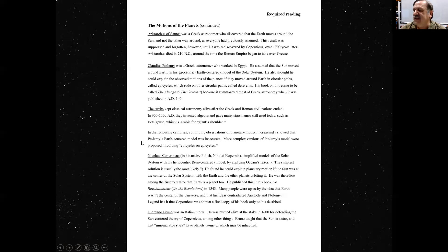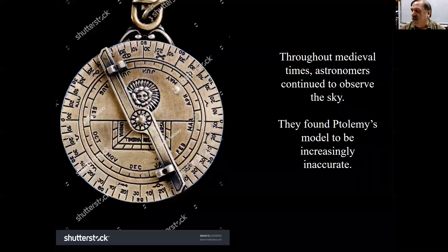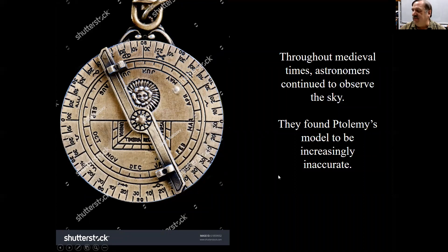In the following centuries, continuing observations of planetary motion increasingly showed that Ptolemy's earth-centered model was inaccurate. More complex versions of Ptolemy's model were proposed involving epicycles on epicycles. Throughout medieval times, astronomers continued to observe the sky. They found Ptolemy's model to be increasingly inaccurate.